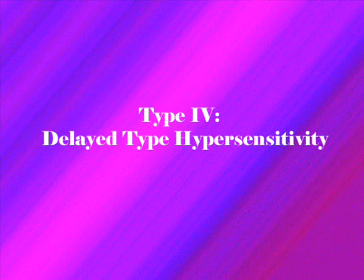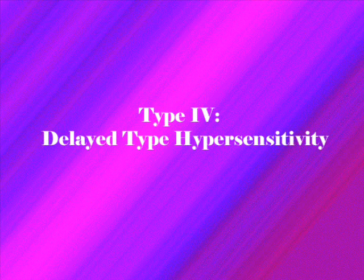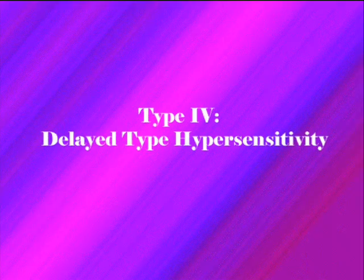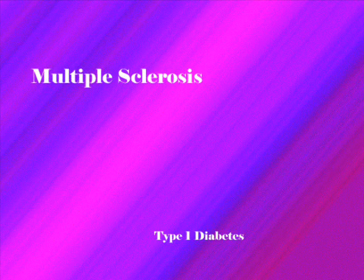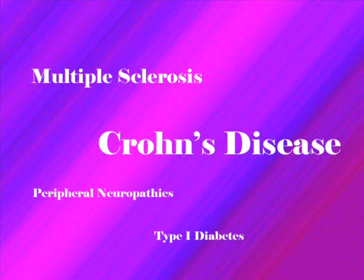The fourth type of hypersensitivity disorder is type 4 delayed-type hypersensitivity. It is a reaction that occurs when the immune system sends T cells to counteract the pathogens that attack the body. The reaction may take several days to appear. The type 4 disorders include multiple sclerosis, type 1 diabetes, Crohn's disease, and peripheral neuropathies.